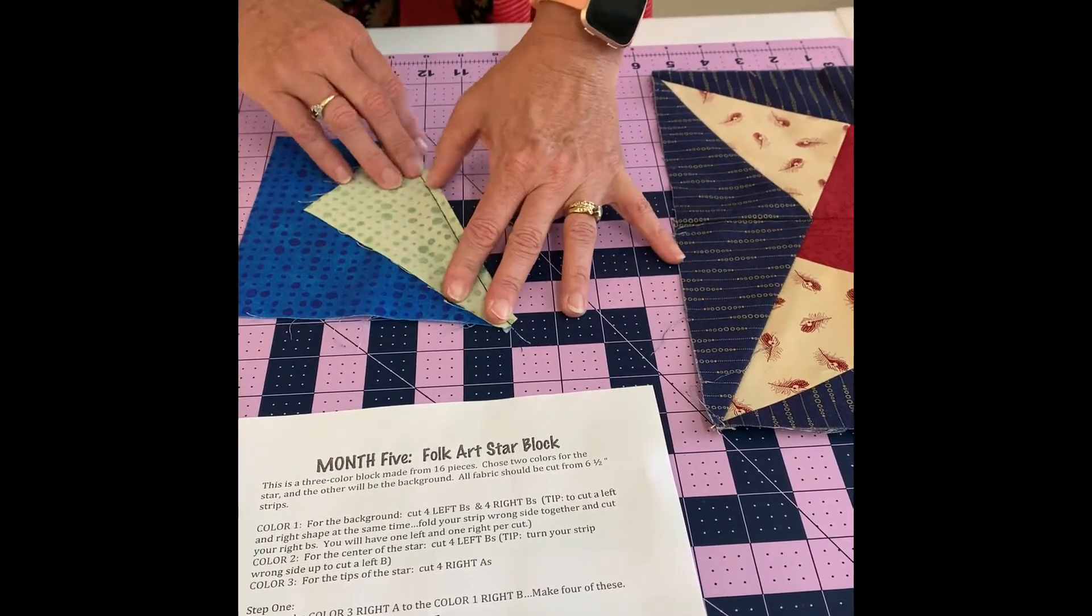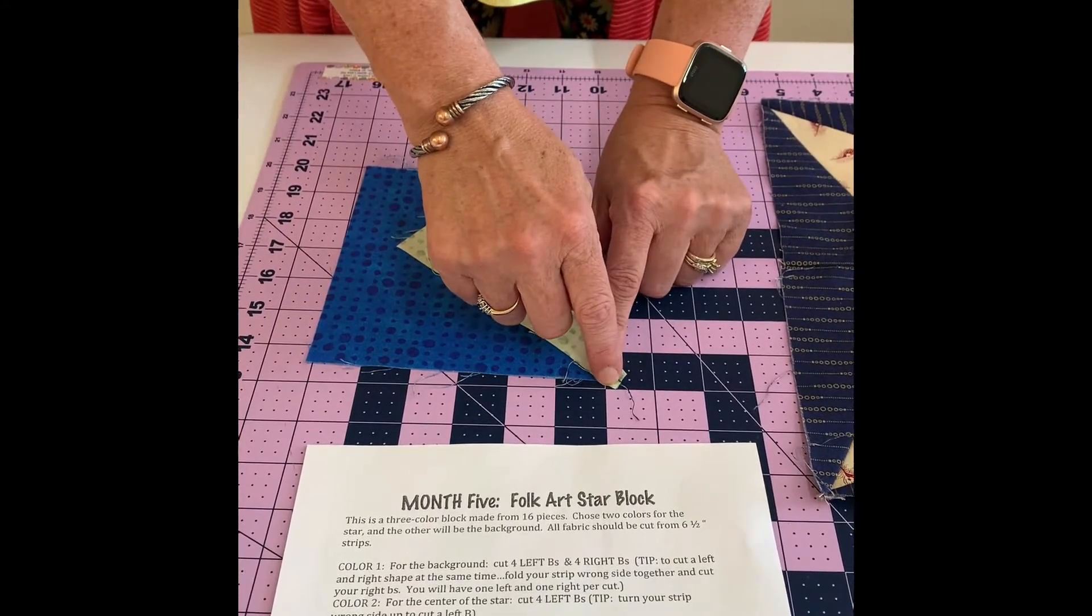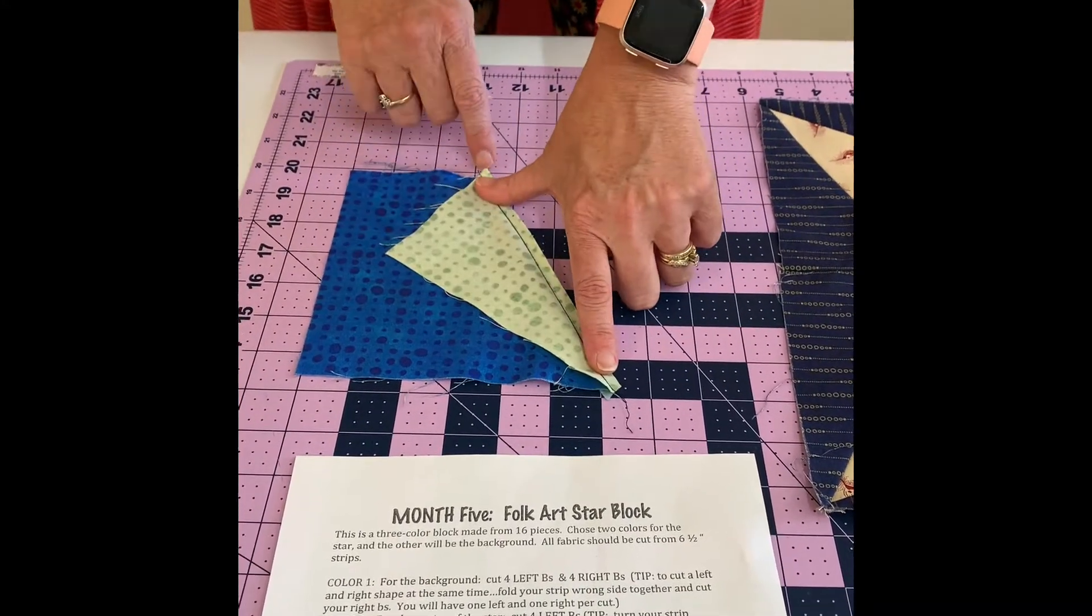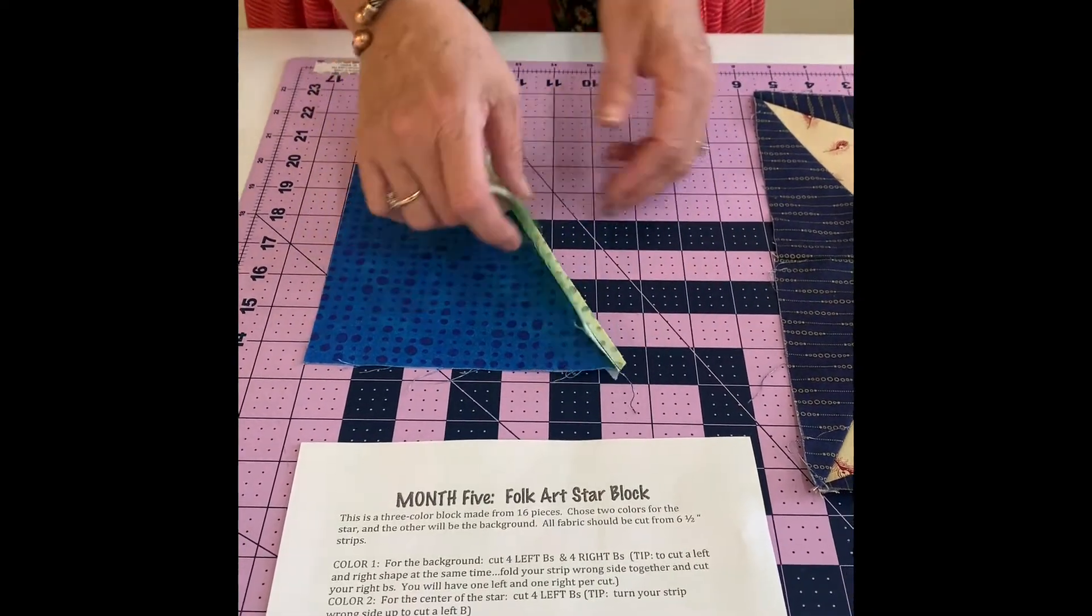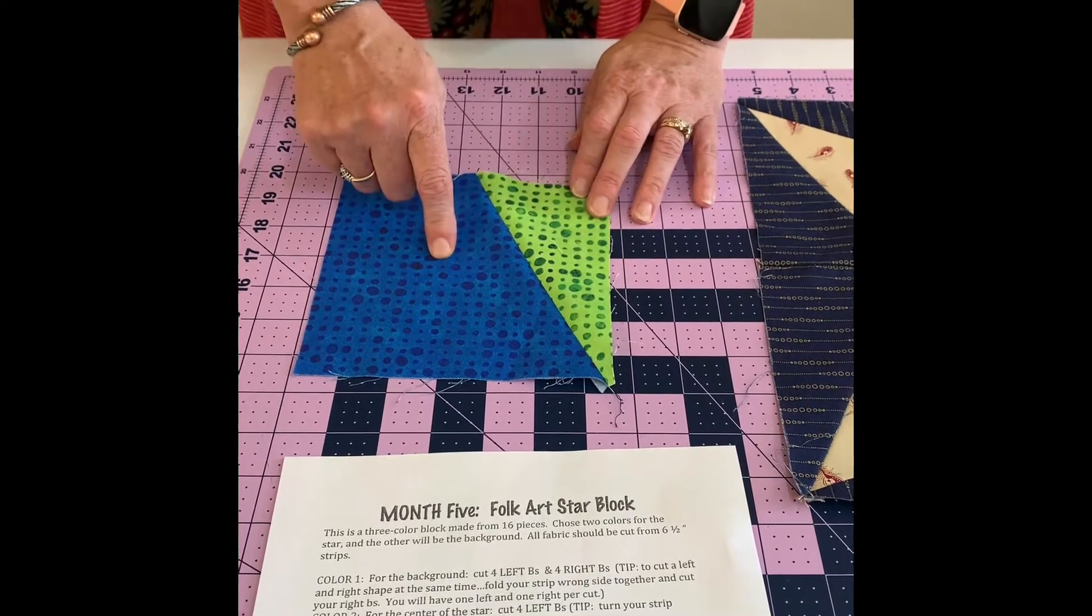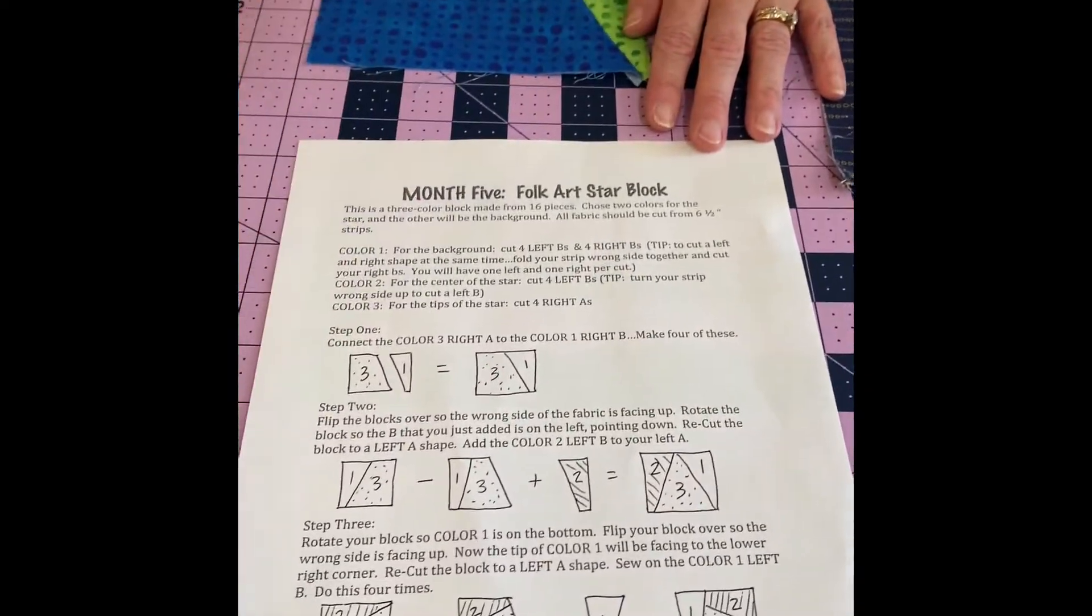And when you are lining it up to sew, you're going to have a dog ear. You're going to have three dog ears. There's one, there's two, and then there's the third one up here. And then using a scant quarter of an inch, you're going to sew your right B to your right A. So that is step one. And you're going to do that four times.